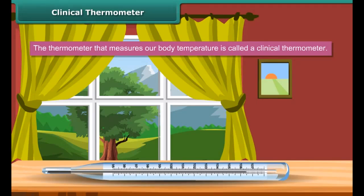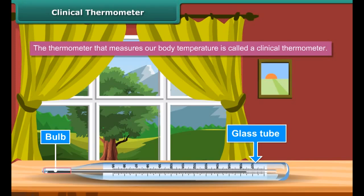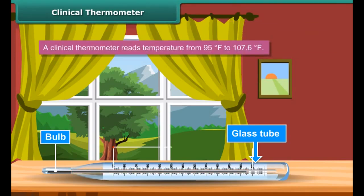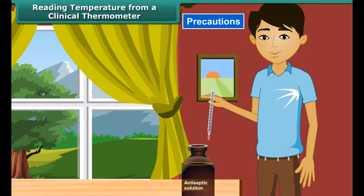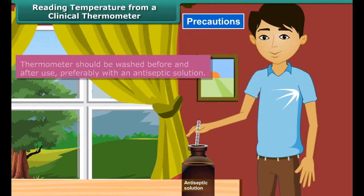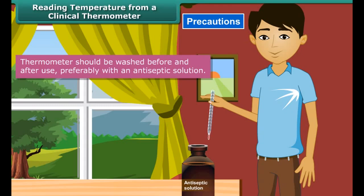A clinical thermometer consists of a long narrow uniform glass tube. It has a bulb at one end filled with mercury. Outside the bulb, a small shining thread of mercury can be seen. A clinical thermometer reads temperature from 95 degrees Fahrenheit to 107.6 degrees Fahrenheit. The normal temperature of the human body is 98.6 degrees Fahrenheit. The clinical thermometer is also known as a doctor's thermometer.